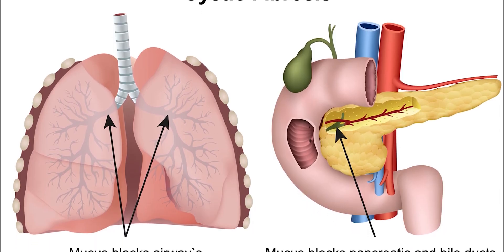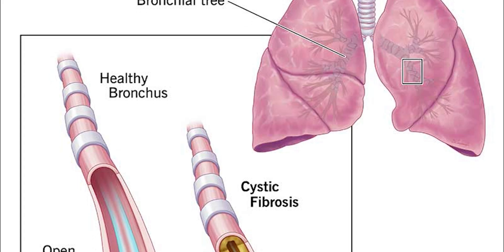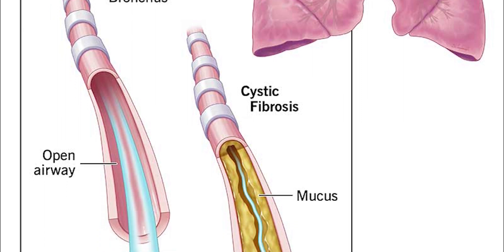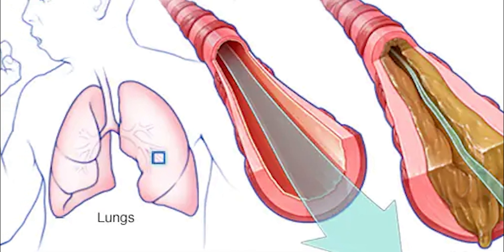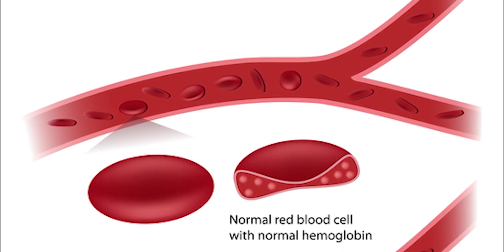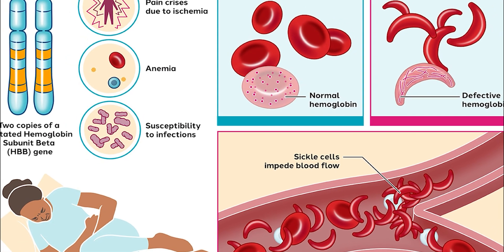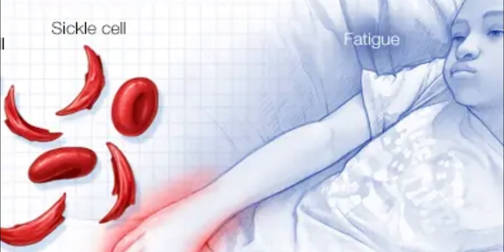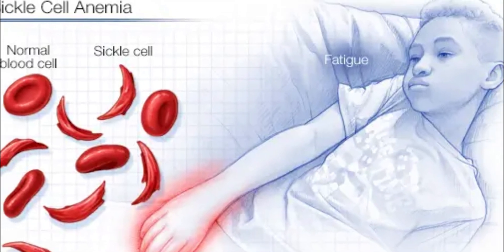Cystic fibrosis is a genetic disorder that affects the respiratory and digestive systems. It is caused by a mutation in the CFTR gene, which results in the production of thick, sticky mucus that clogs the lungs and can lead to infections and other respiratory problems. Sickle cell anemia is a genetic disorder that affects the production of hemoglobin. People with sickle cell anemia produce abnormal hemoglobin, which causes their red blood cells to form a sickle shape and become stiff and sticky, resulting in blockages in the blood vessels, leading to pain and a variety of other health problems.